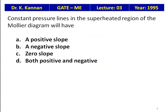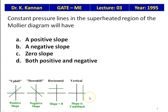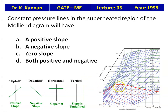A constant pressure line in the superheated region of a Mollier diagram will have a positive slope, negative slope, zero slope, or both positive and negative? In the Mollier diagram, constant pressure lines at 500 bar, 200 bar, 100 bar, and 50 bar are inclined upward. So the answer is a positive slope — the pressure line has a positive slope in the Mollier diagram.